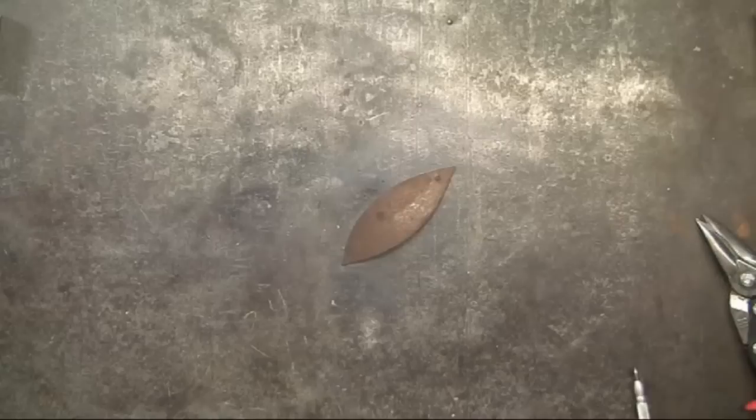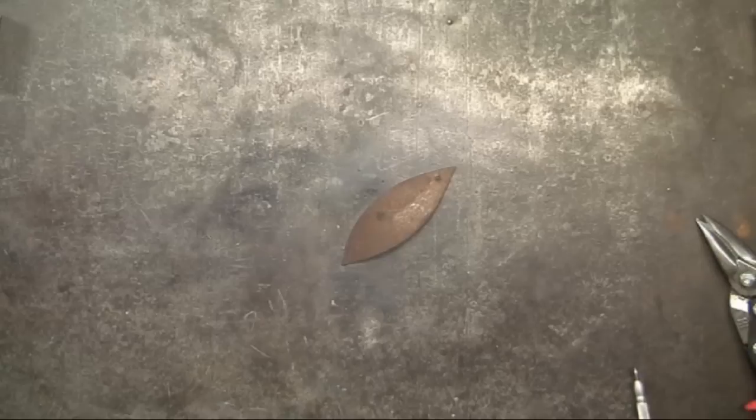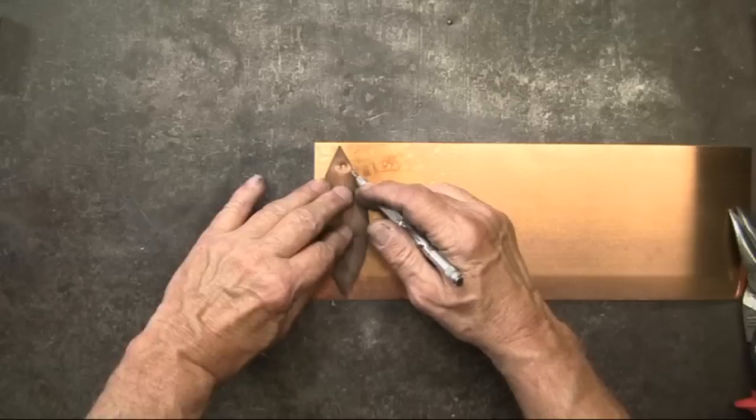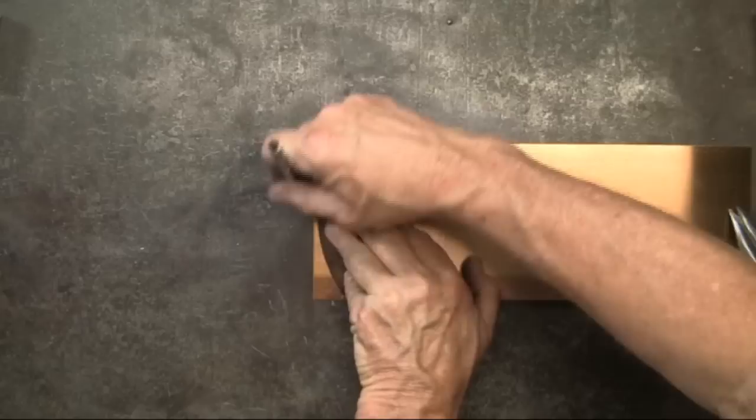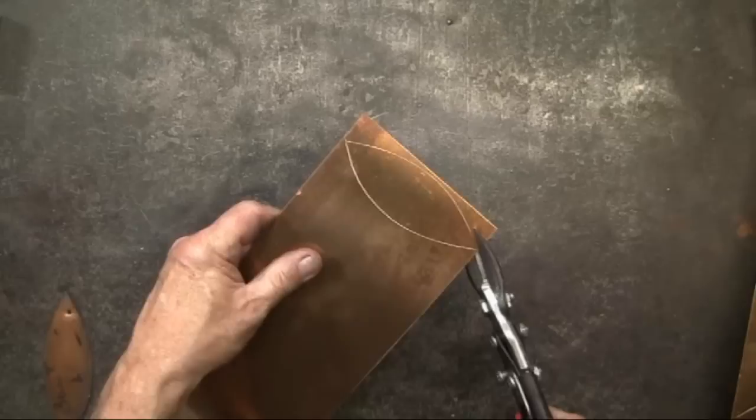This is a simple leaf pattern that I've been using for years and I've cut it out as some sheet metal to make a permanent pattern. Scribing around the pattern, in this case I'm using some bronze, some sheet bronze. I'll scribe this out and then begin cutting it out with some aviation snips.